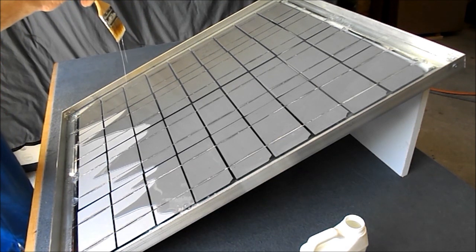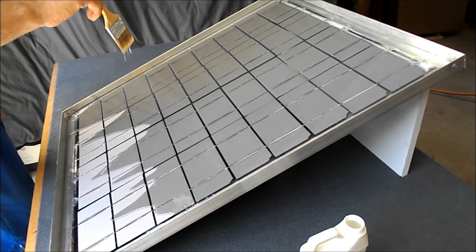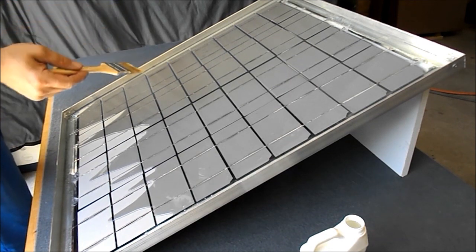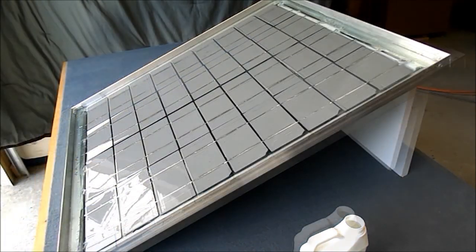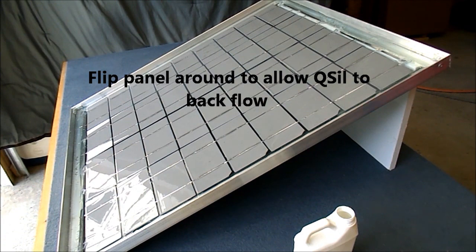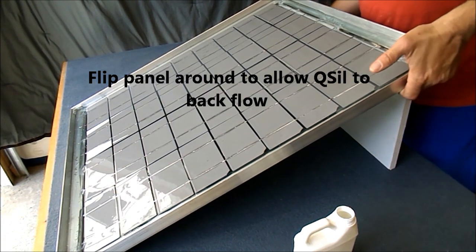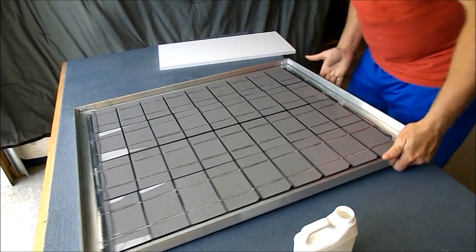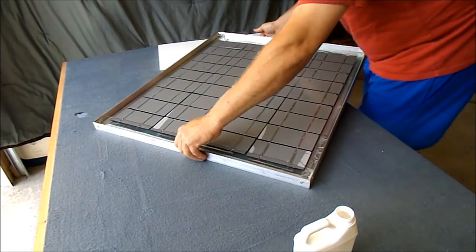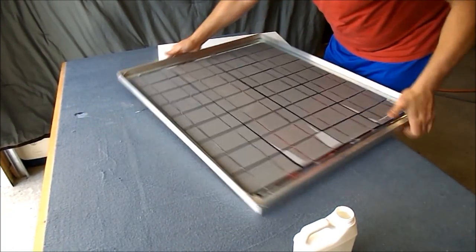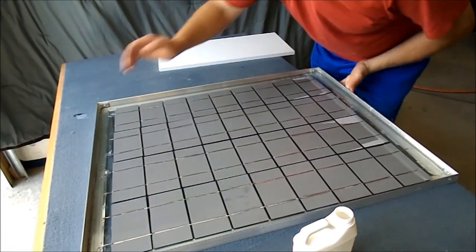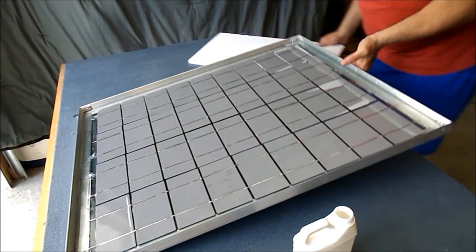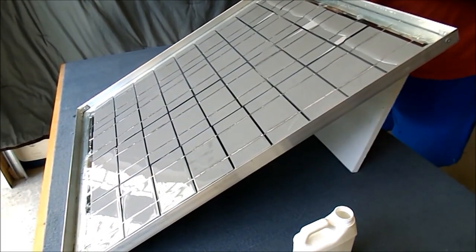Once the encapsulant has pooled at the bottom of the panel, remove the board and reverse the direction of flow on the panel. As you can see in the demonstration, as soon as you lift up the low end of the panel, the encapsulant starts to flow and covers spots that were missed on the first pour.